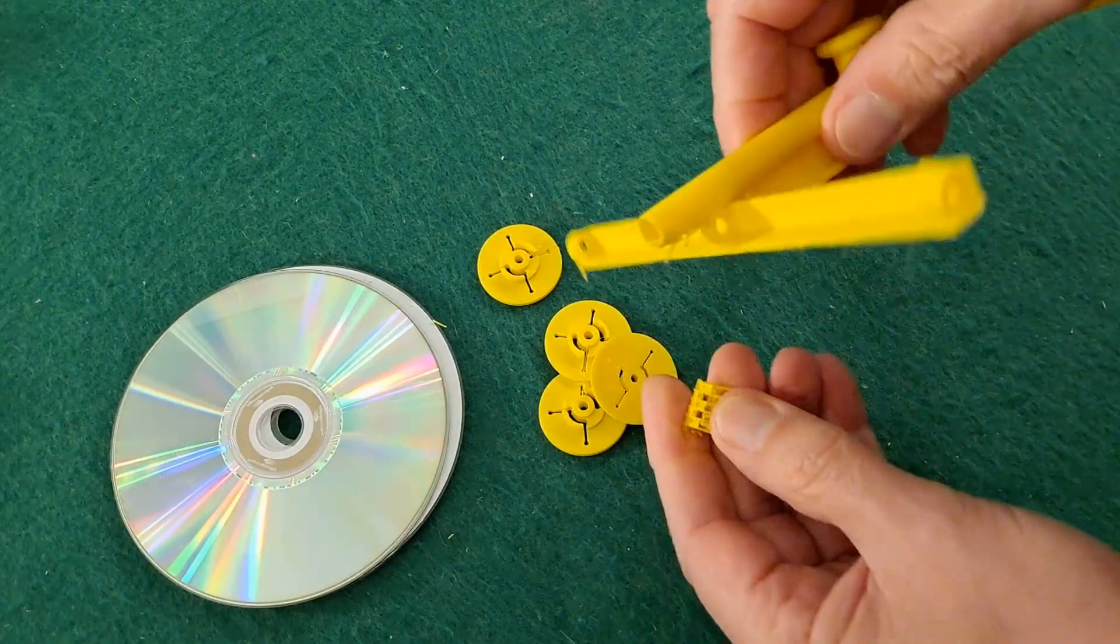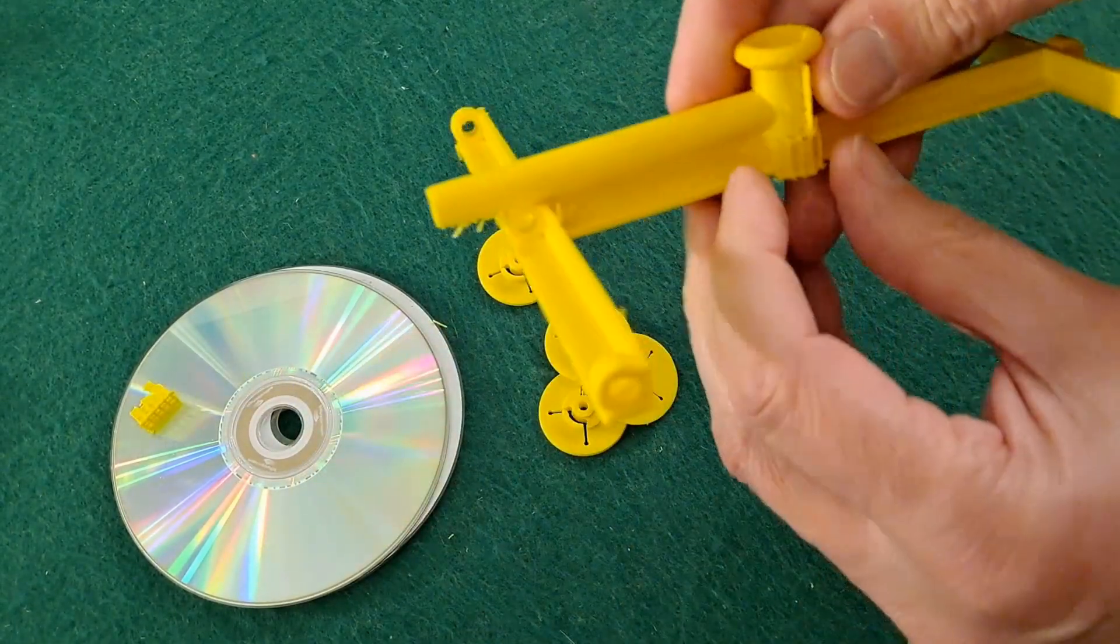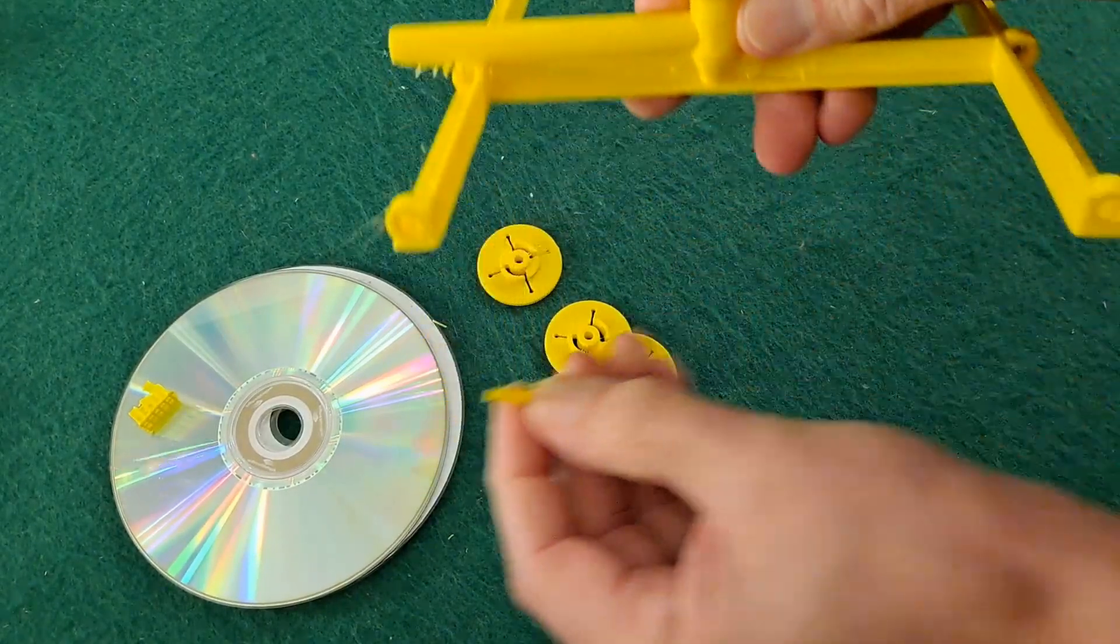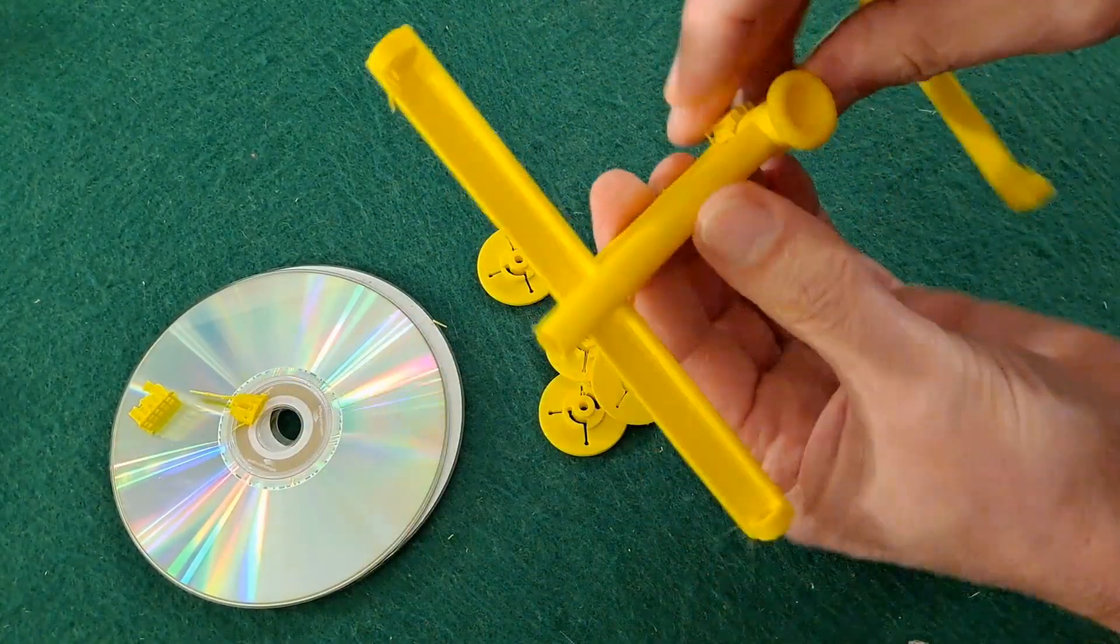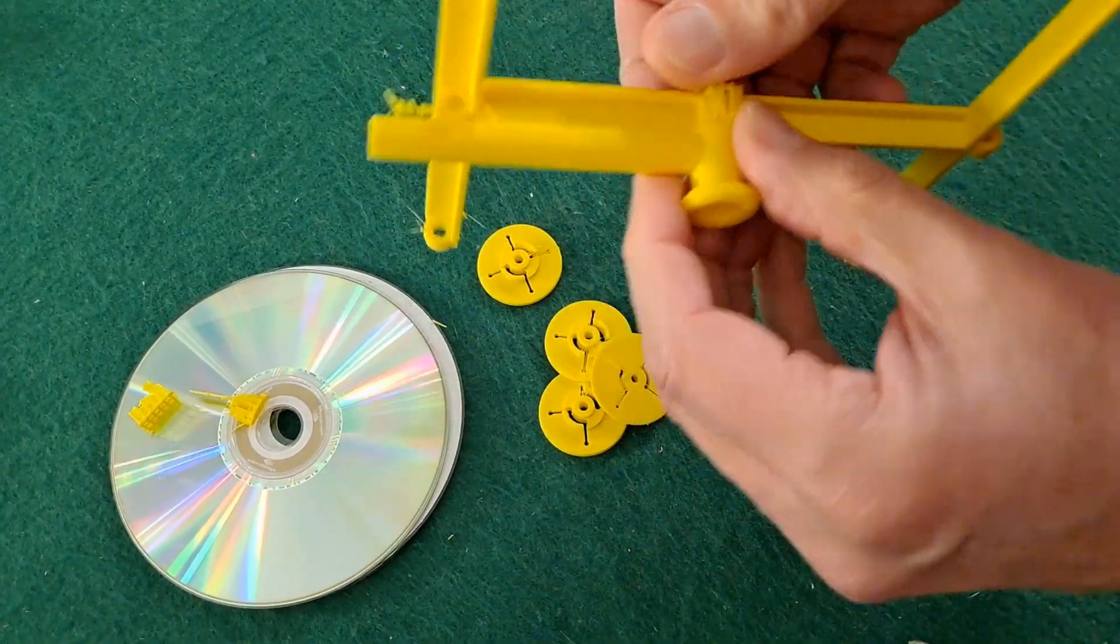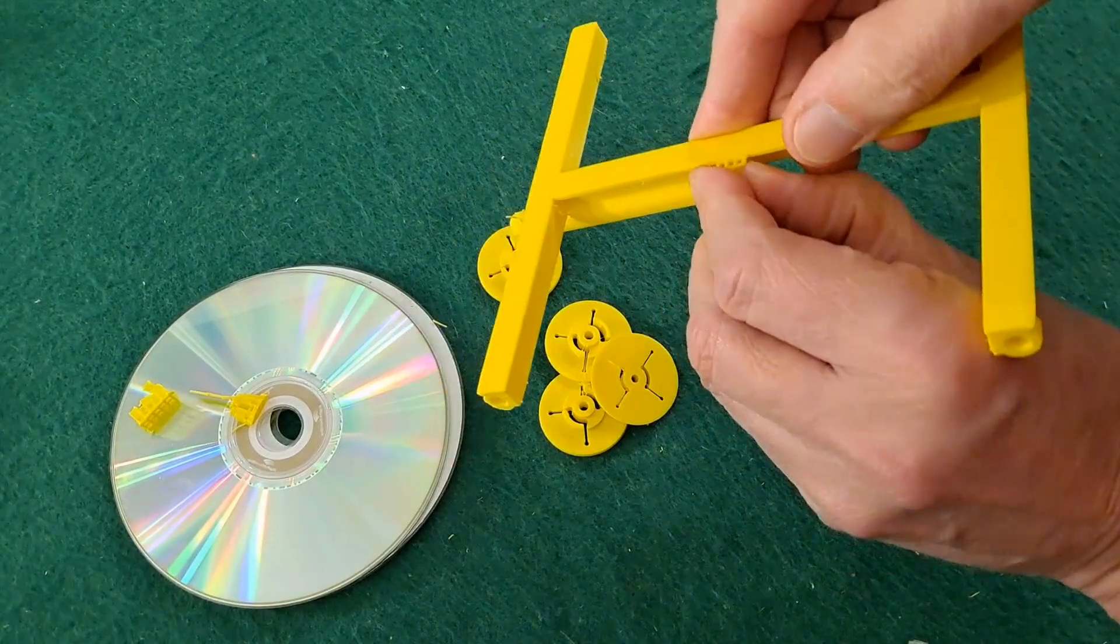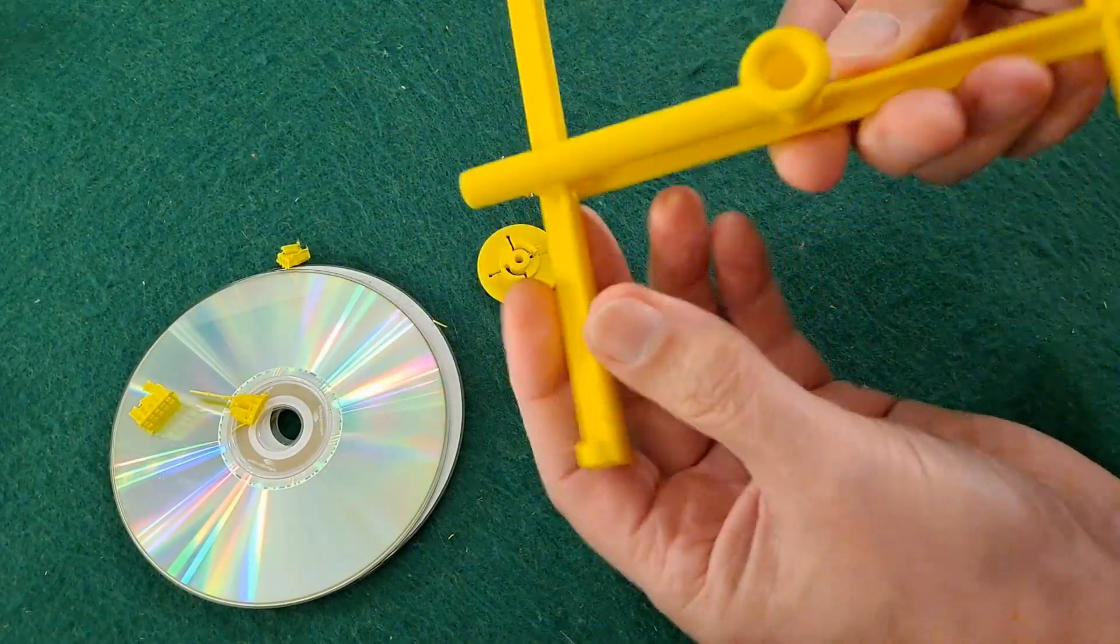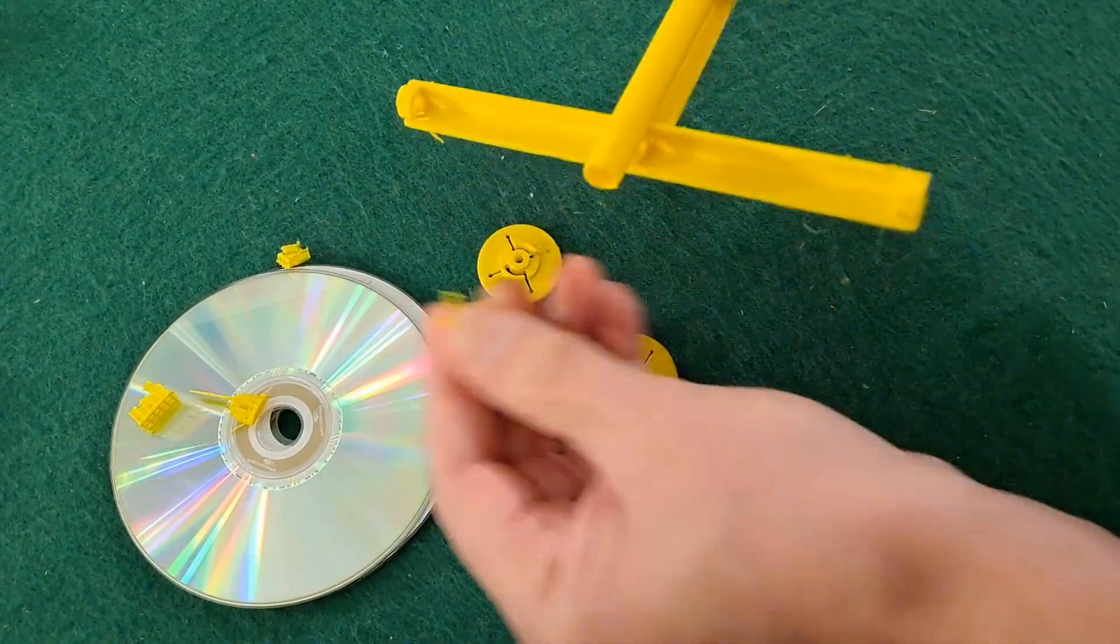This is just support stuff that I need to trim off. I'm not quite sure why it's decided to put support layers there, because it really didn't need them. Right, I'll trim that up a little bit.